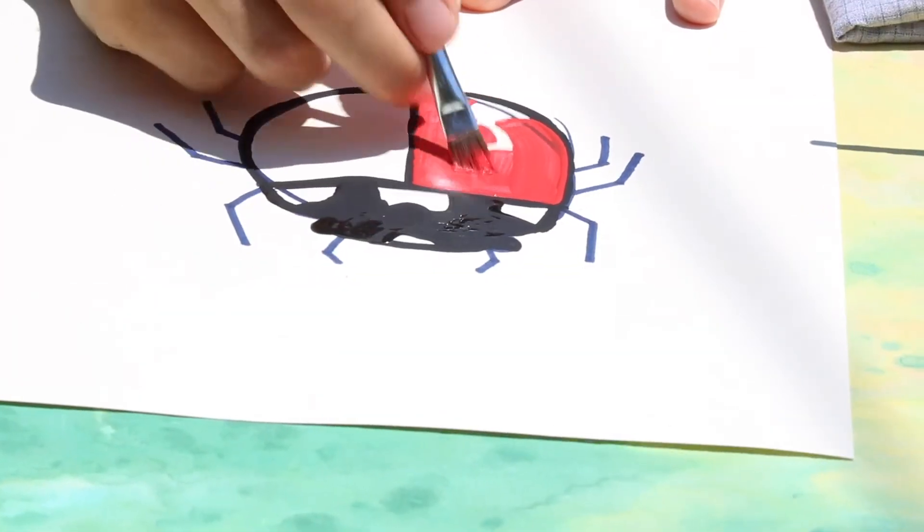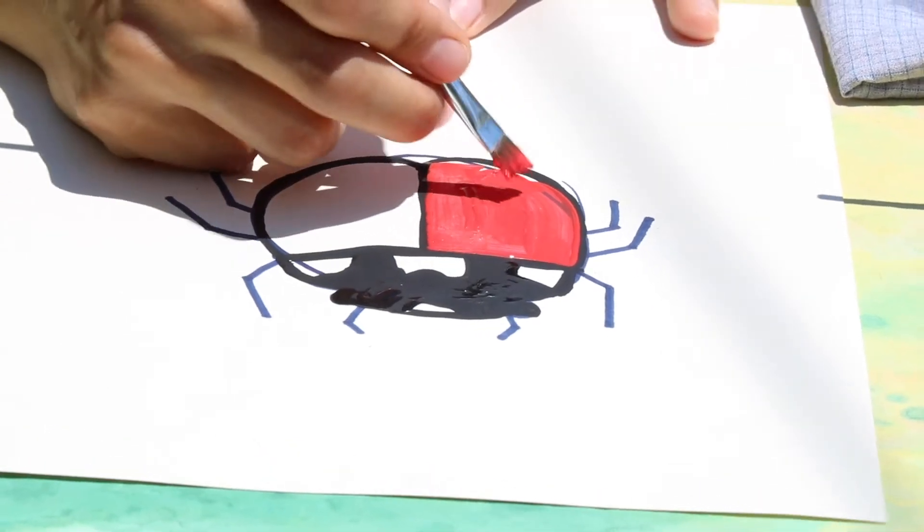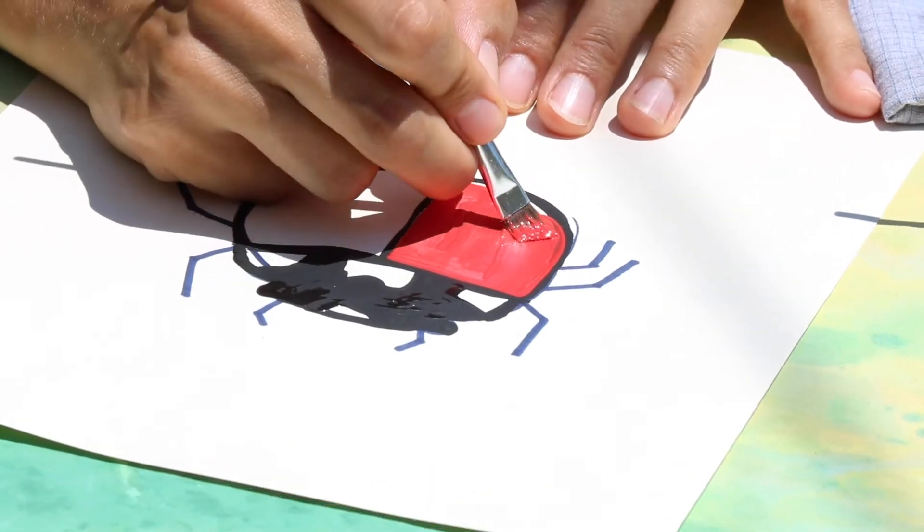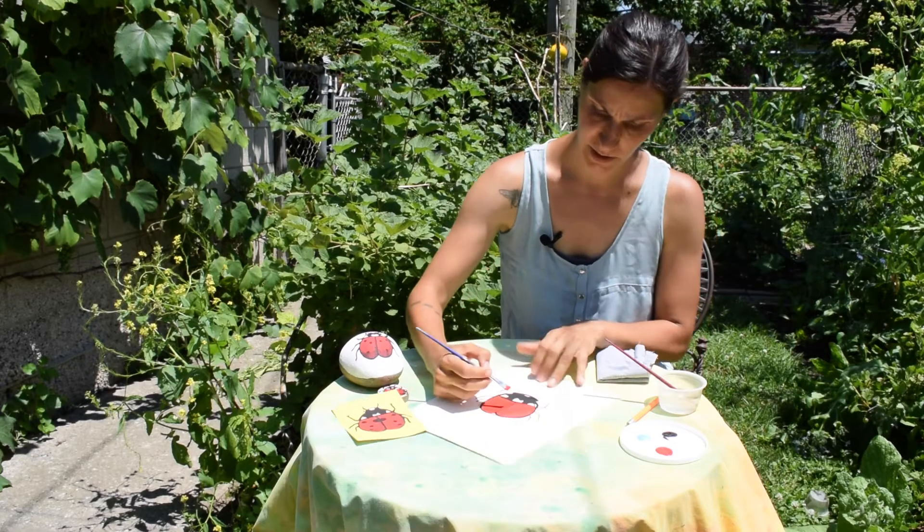A lot of red paints don't cover completely, so you might have to do a few layers of the red to make it cover more. So I see it's drying up, so I'm just doing my other layer.